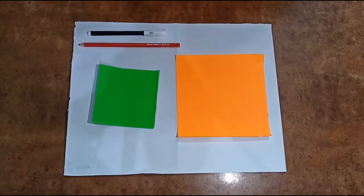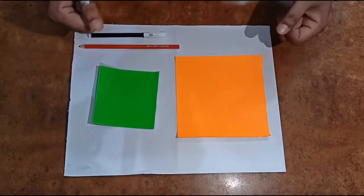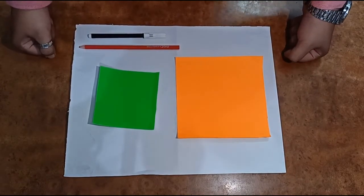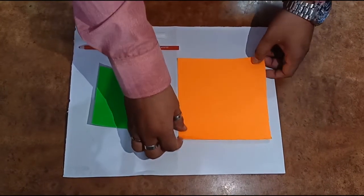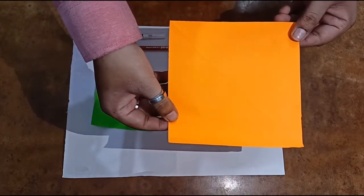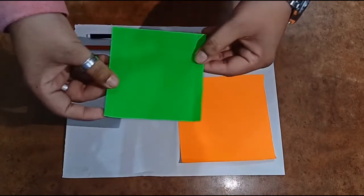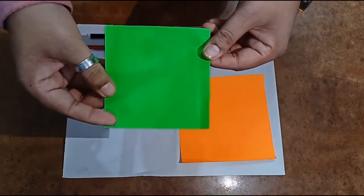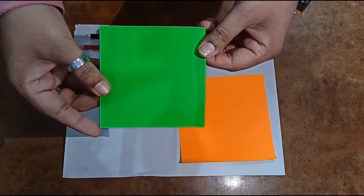So students, these are the materials required to make paper carrot. The first one is orange fluorescent paper, which will make our carrot's body. The second one is green fluorescent paper, which will make the leaf of the carrot.